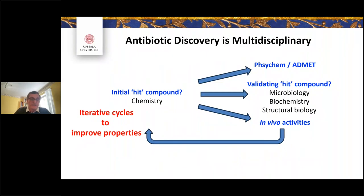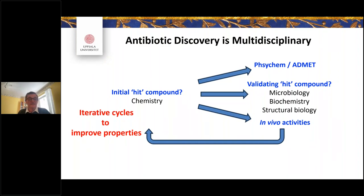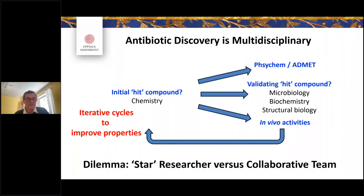The whole process is multidisciplinary, whether in industry or academia. A chemist who discovers a hit compound needs to investigate physicochemical properties, run ADMET assays, involve microbiology, biochemistry, maybe structural biology, and examine in vivo activities — and data from all of this has to feed back into the chemistry. There have to be iterative cycles. You have this dilemma of the individual star researcher versus a collaborative field.